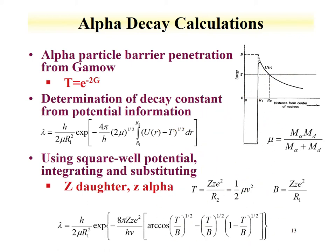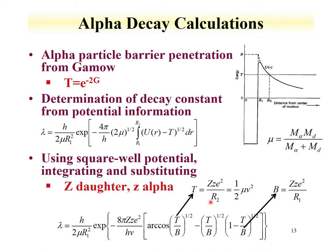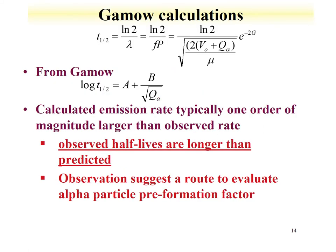Using the square-well potential, integrating and substituting, the equation comes out to a decay constant equal to a number of factors. The large Z is the daughter and the small z is the alpha particle. We also have terms T and B, which are functions of Z, the radius, and the mass. This calculation, with all its terms, can be rearranged to evaluate the half-life, since half-life = ln2 divided by the decay constant.